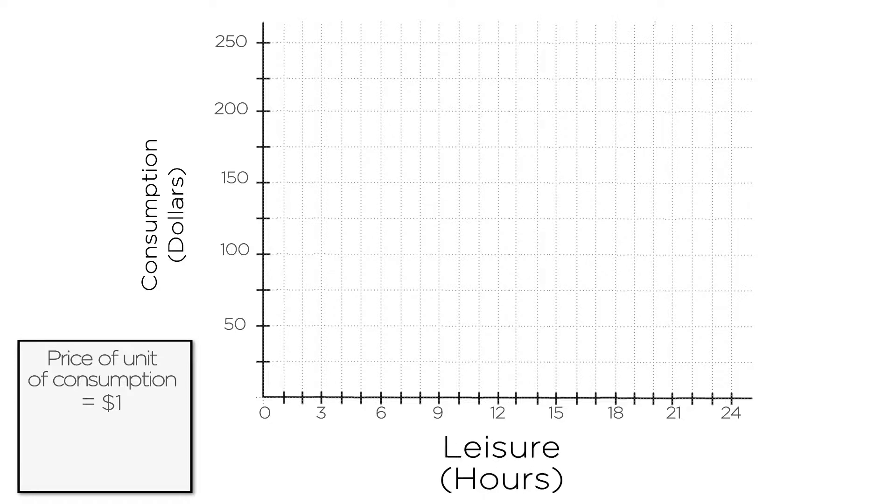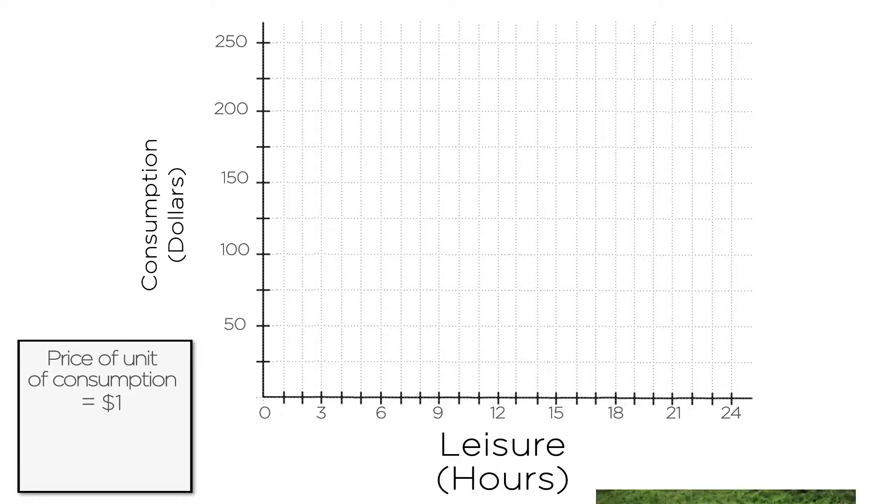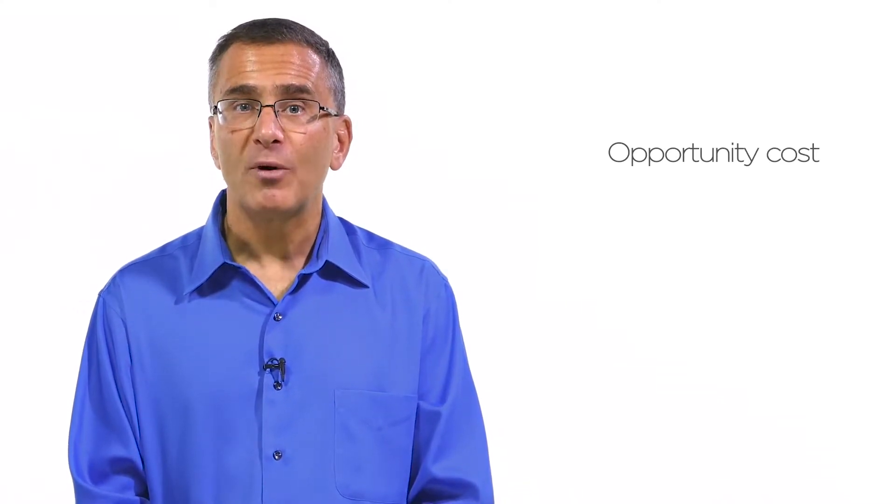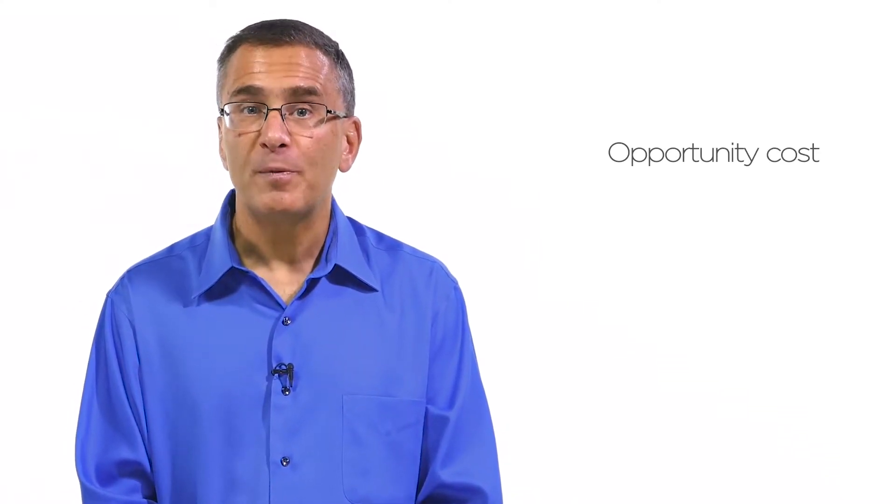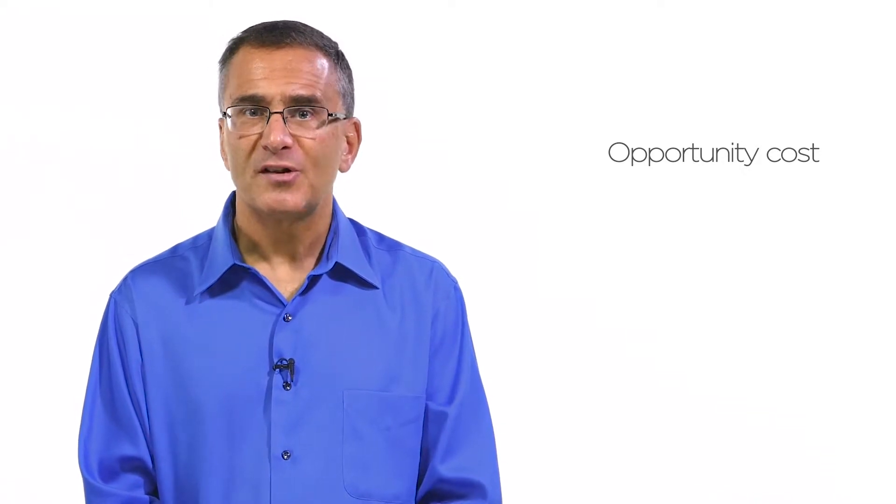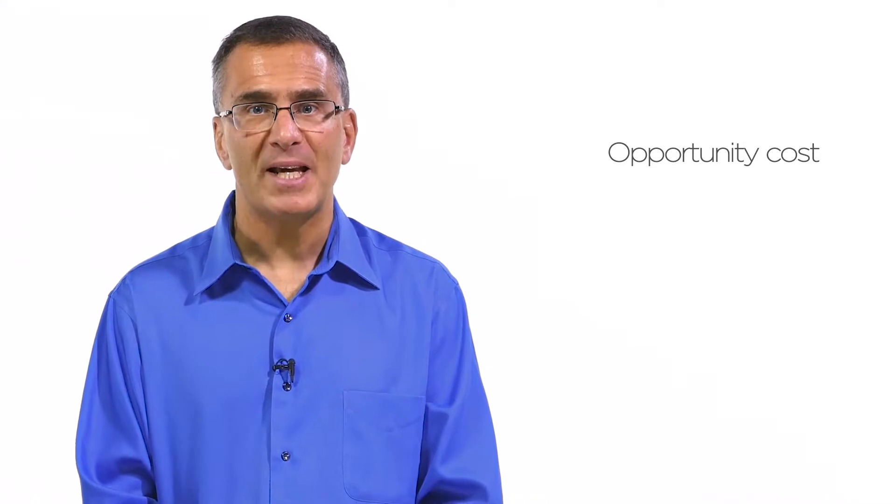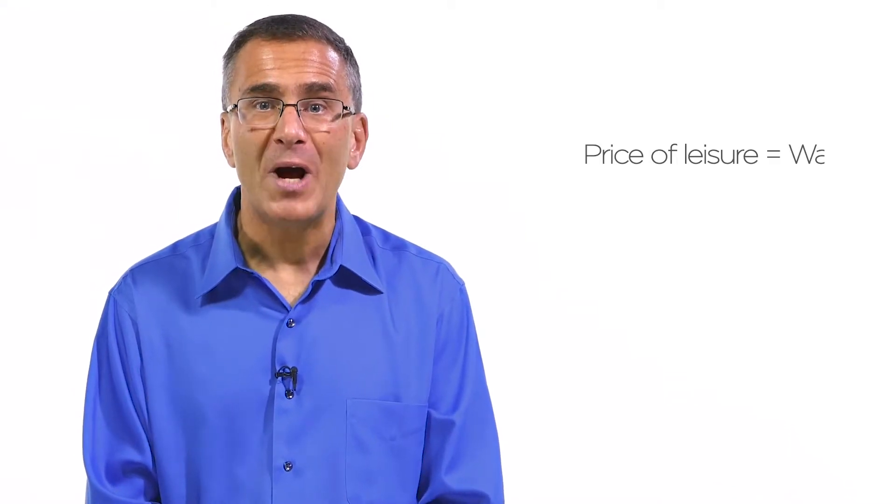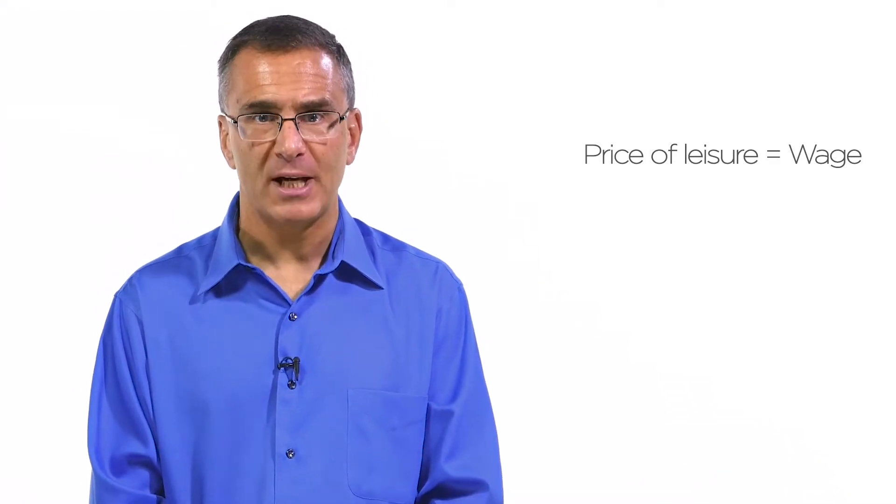What about the price of leisure on the x-axis? If leisure is just relaxing and doing nothing, how can this cost anything? Ah, but leisure is far from free. This brings us back to our old friend, opportunity cost. If you're enjoying an hour of leisure, that's an hour you could have spent working and earning a wage. Sitting around is not free. Sitting around costs you the money you could have been making. It's this kind of insight which is why people can get annoyed by economists. So the price of leisure is exactly equal to the wage you would have received working during that time.